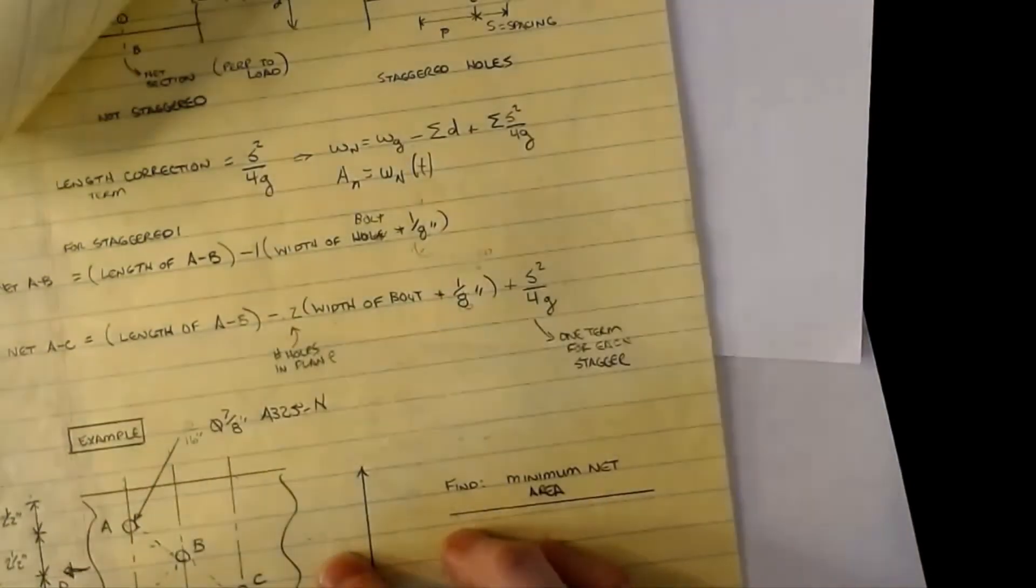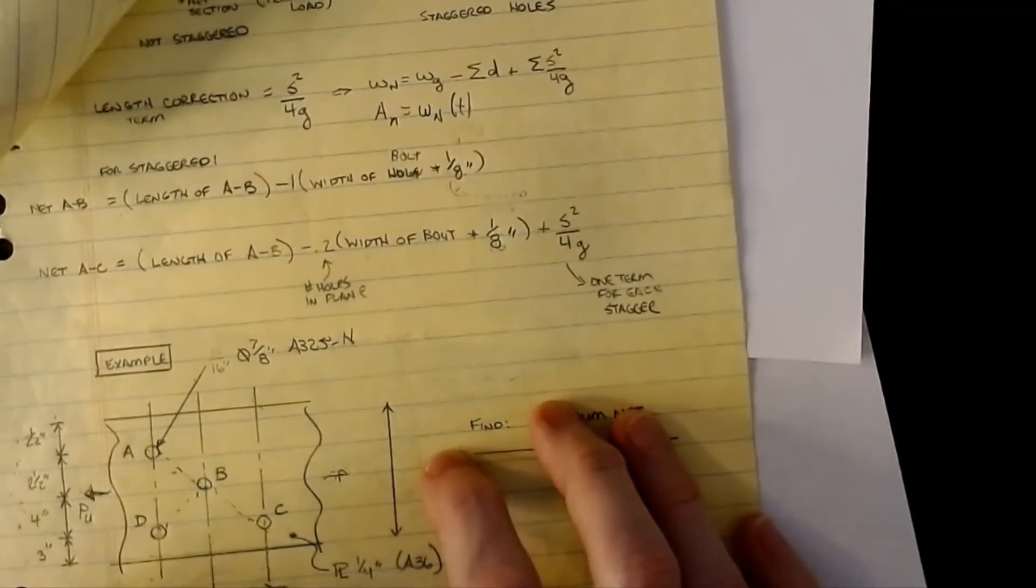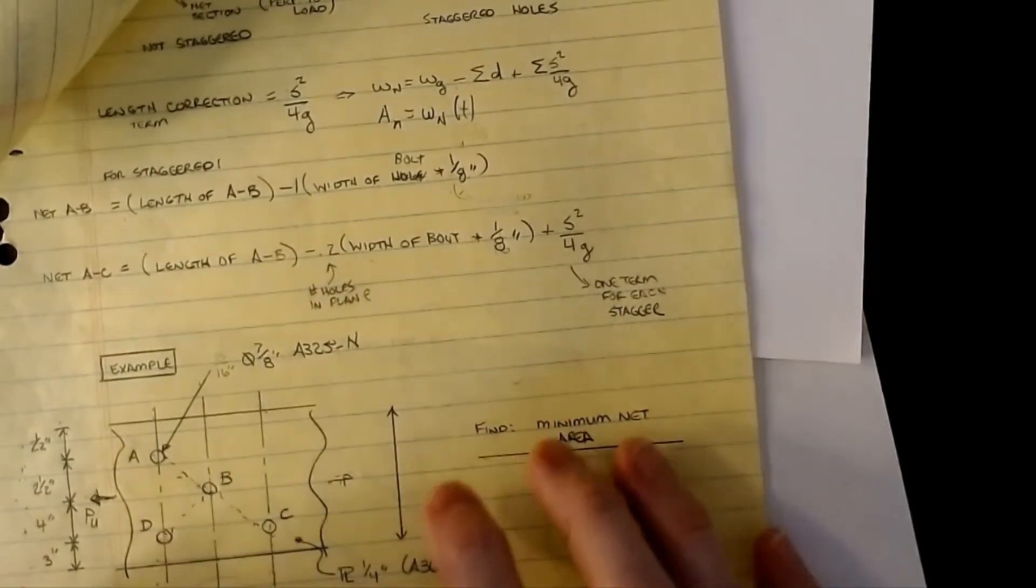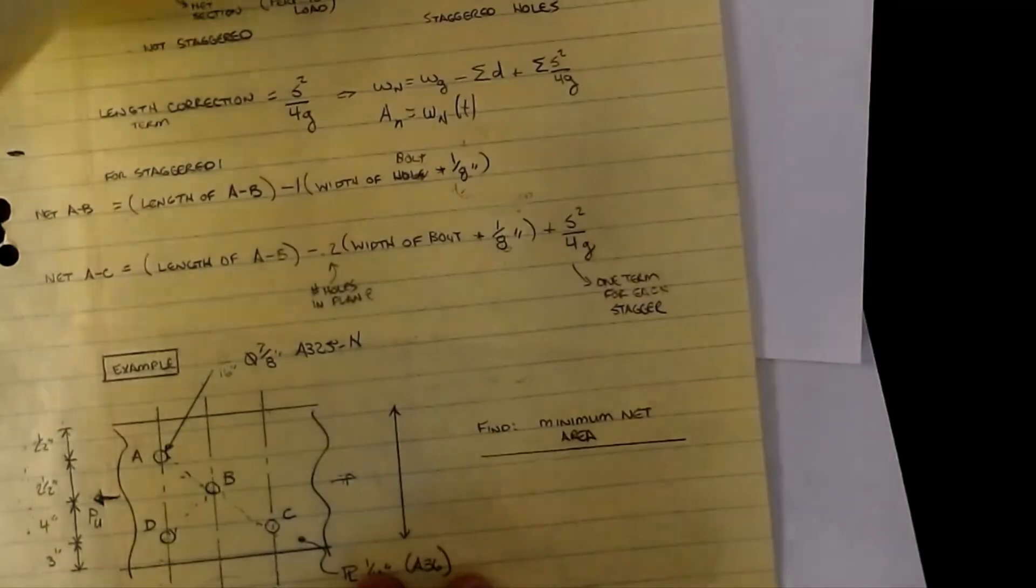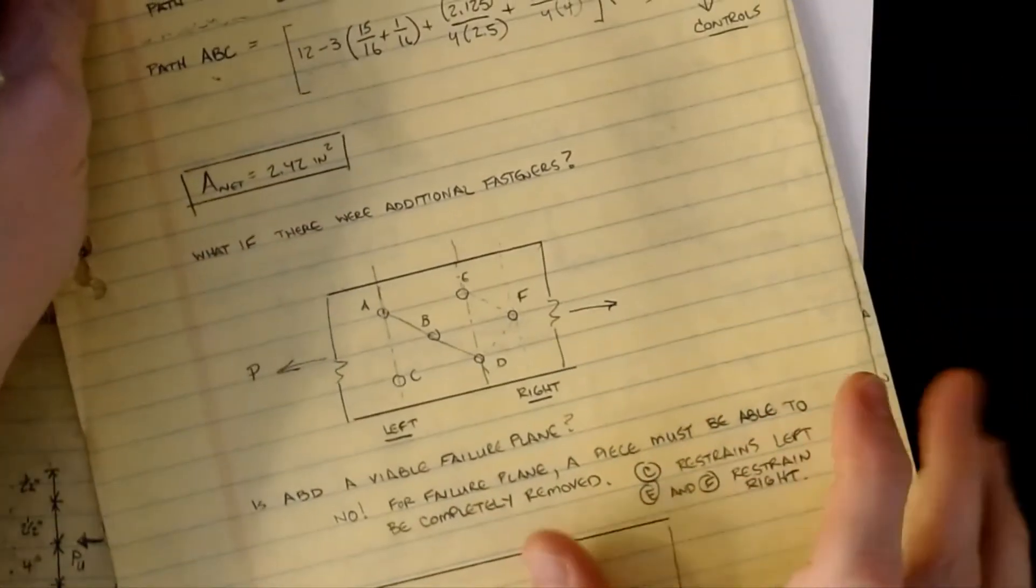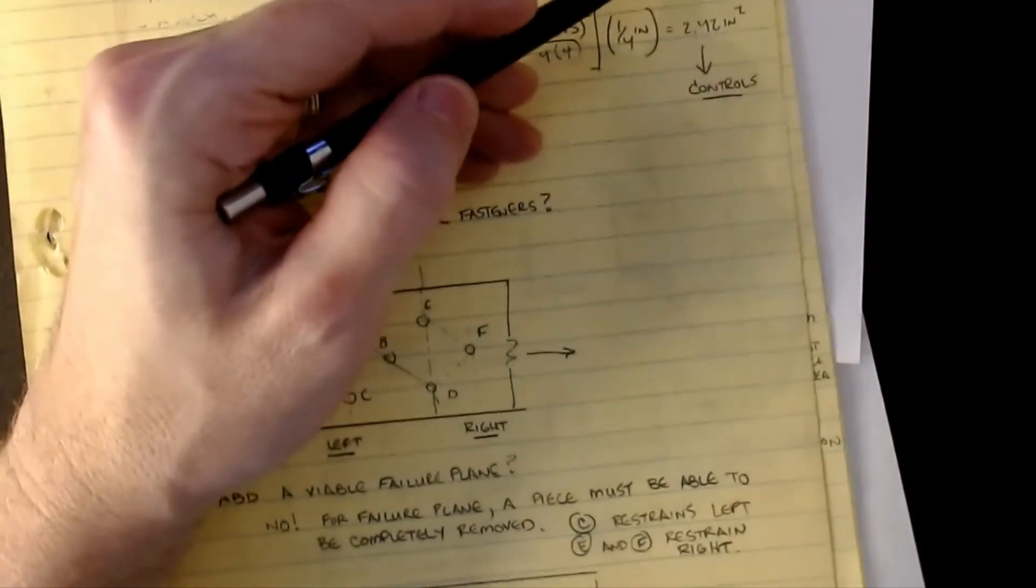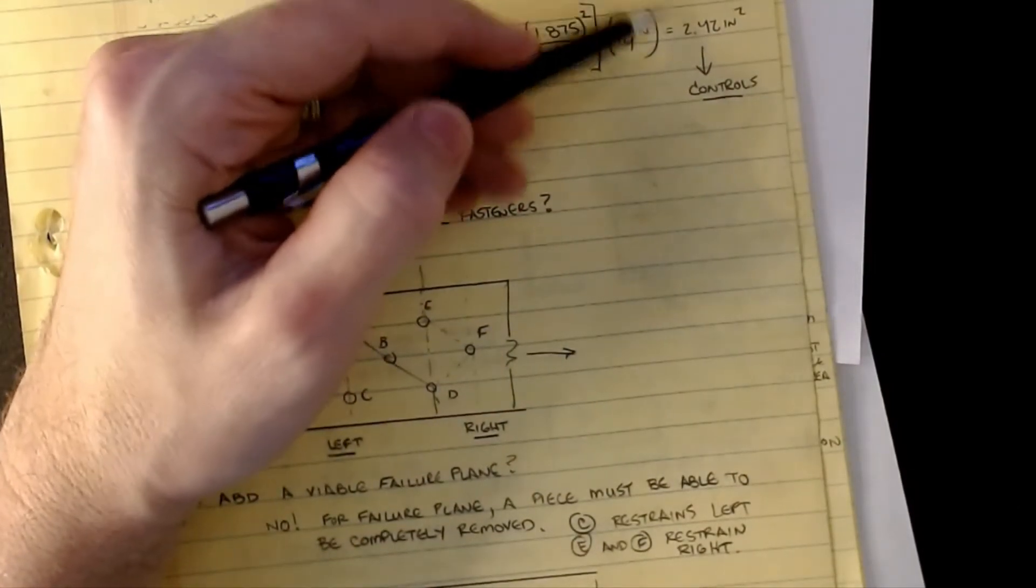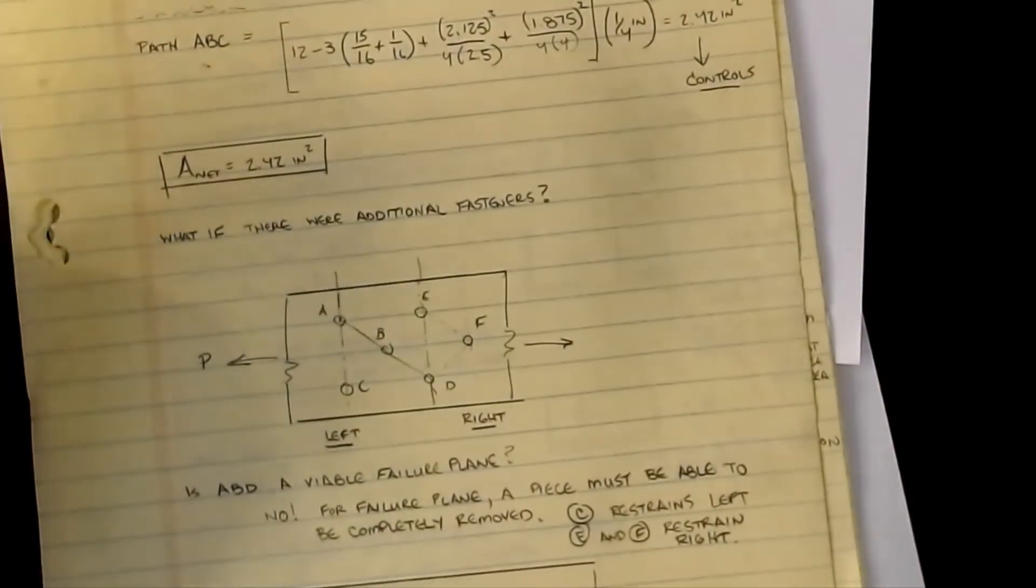This guy actually has a value of 2.42. So if I pull from the other side, it's actually weaker. If I pulled the load this way, then this would be the piece that controls. Those are the paths you're looking for. The art of these hole staggers is figuring out which path is the one that controls. My controlling area would be, depending on which way you're pulling, either 2.42 or 2.43.